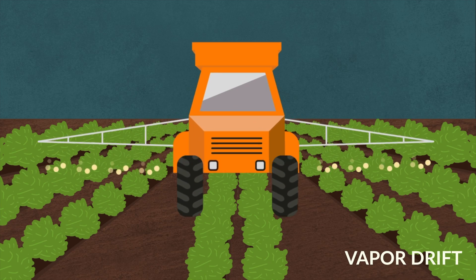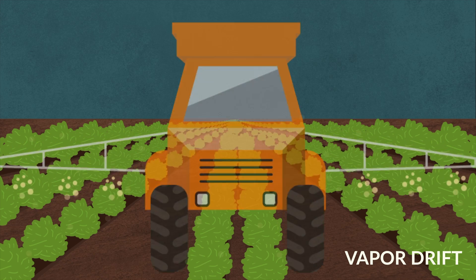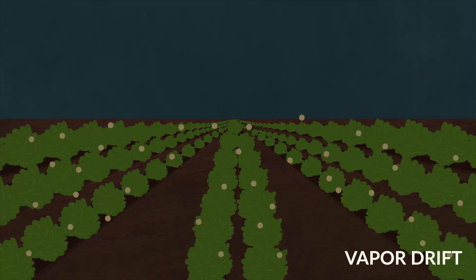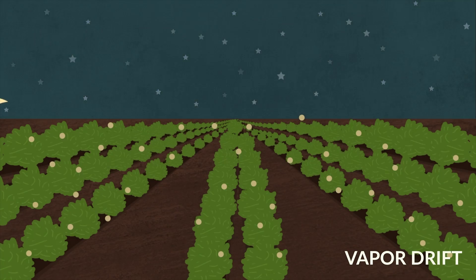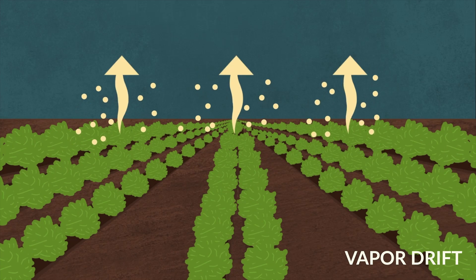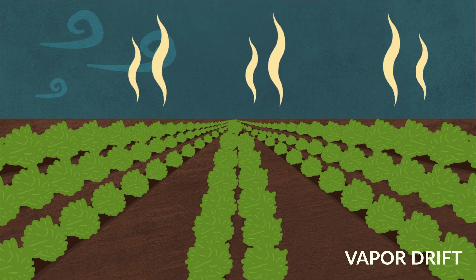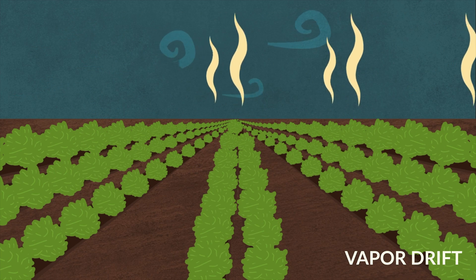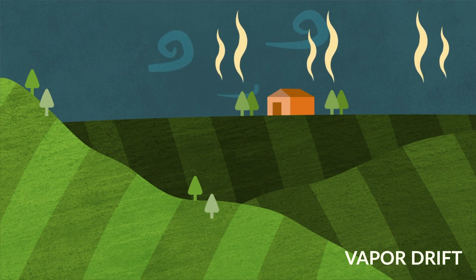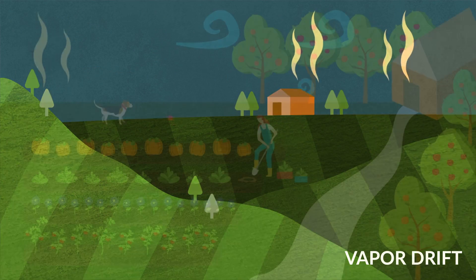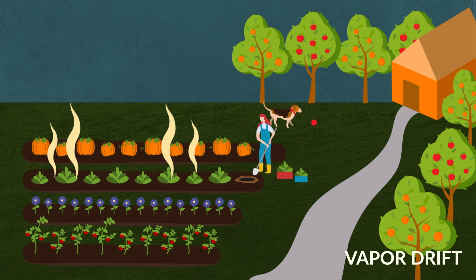In recent years, it has become evident that vapor drift is also a significant cause of herbicide injuries. Even days after application, highly volatile herbicides like 2,4-D and dicamba can turn into vapor and move long distances off-site before landing on and injuring trees and plants.